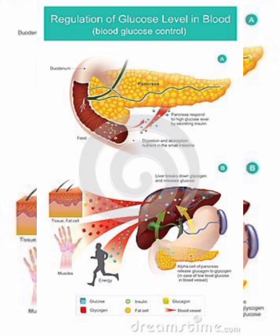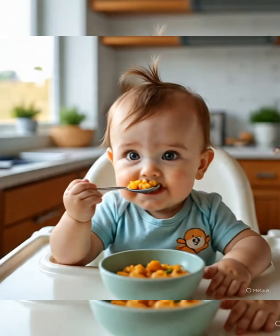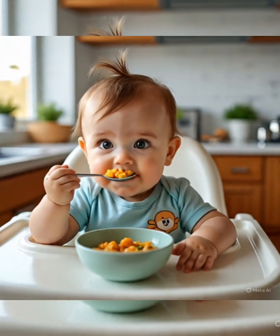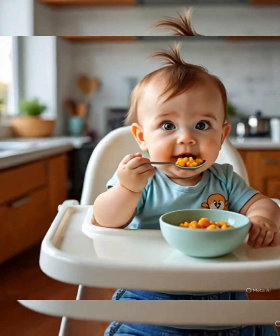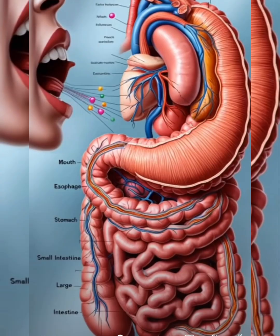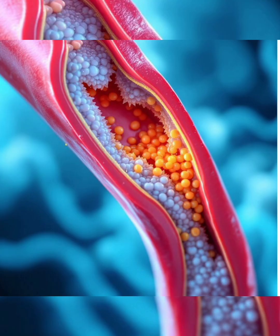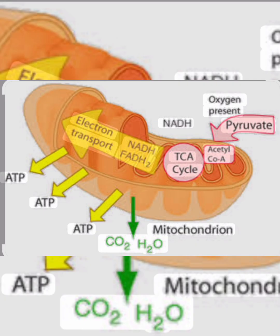Today we are going to discuss the action of insulin hormone. When you take food, after passing through the stomach, it gets digested in the small intestine. Here in the small intestine, it gets converted into glucose. This glucose mixes with the blood and is utilized to produce energy in the form of ATP for various functions.